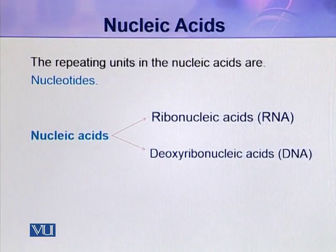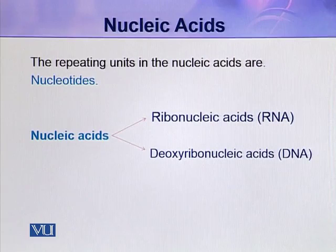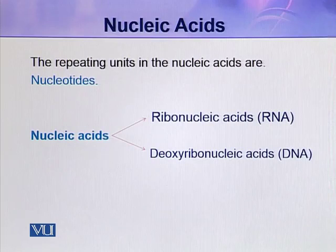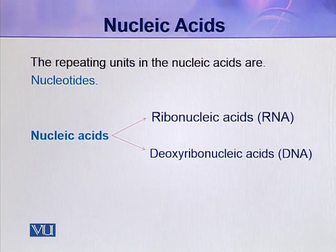Nucleic acids are mainly of two types: ribonucleic acids and deoxyribonucleic acids. Ribonucleic acid is abbreviated as RNA, while deoxyribonucleic acid is abbreviated as DNA. There are three types of RNAs: tRNA (transfer RNA), rRNA (ribosomal RNA), and mRNA (messenger RNA). They have a number of functions to perform in the cell, mainly during protein synthesis.